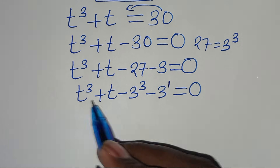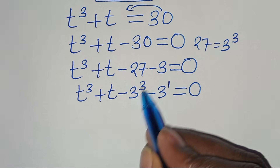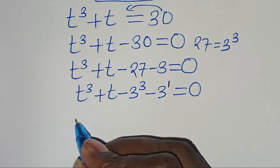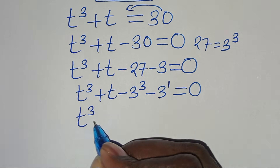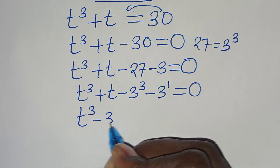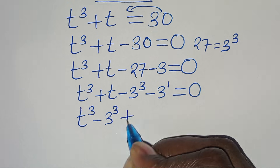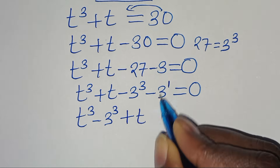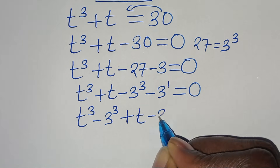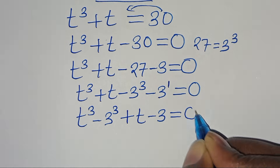Since we have t³ and 3³, we rearrange to group them: t³ minus 3³, then plus t minus 3, all equal to 0.